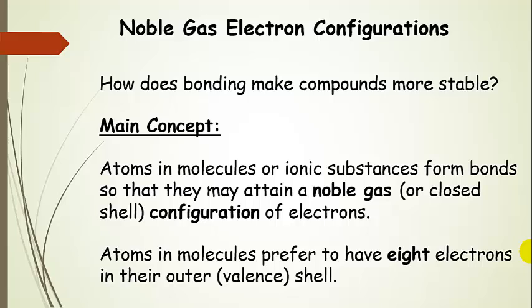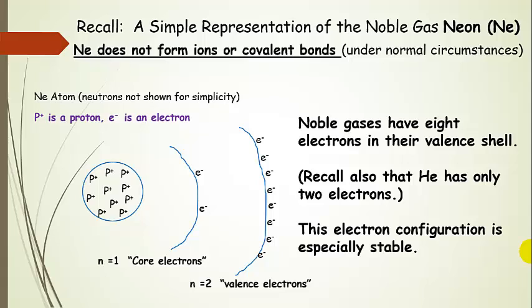The exception to that is hydrogen and helium. Helium requires two electrons for a closed valence shell, so hydrogen's goal is to get to two electrons in the valence shell. Let's take a look at neon. Neon is a noble gas, and in general neon doesn't form ions or covalent bonds under normal circumstances. Here's a representation of neon, showing all the protons in the nucleus, which is not to scale.